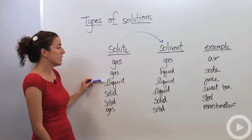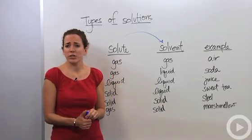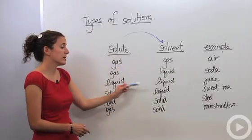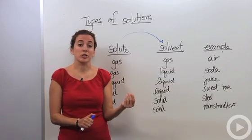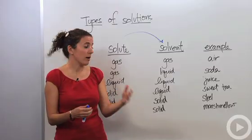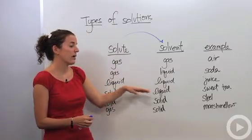Then we have the liquid dissolved in liquid. Juice is a good example of that, some fresh squeezed juice or something along those lines. You can have solid dissolved in liquid, which is like our sugar. Our sugar is going to be our solid form dissolved in our liquid tea. You'll actually see this quite often, solid dissolving in liquid.